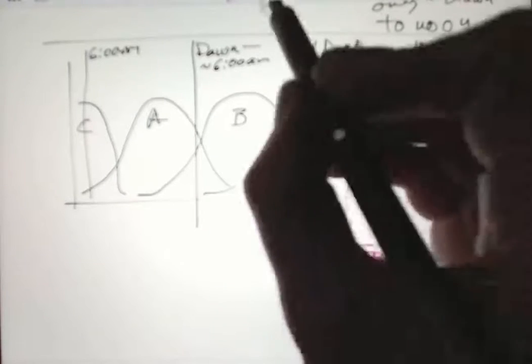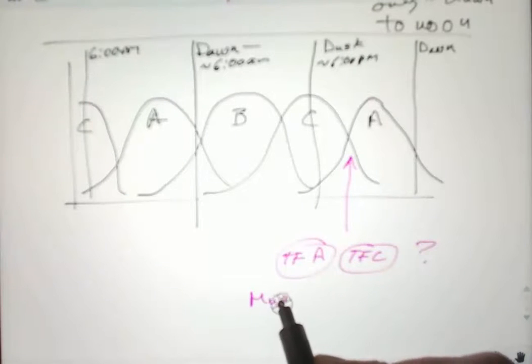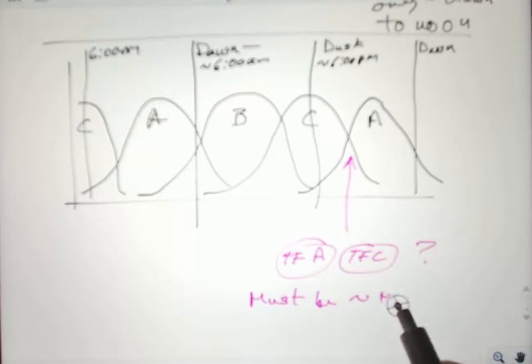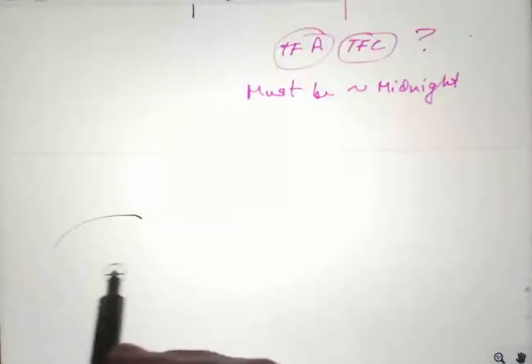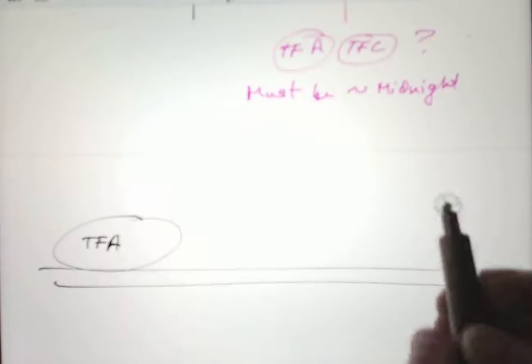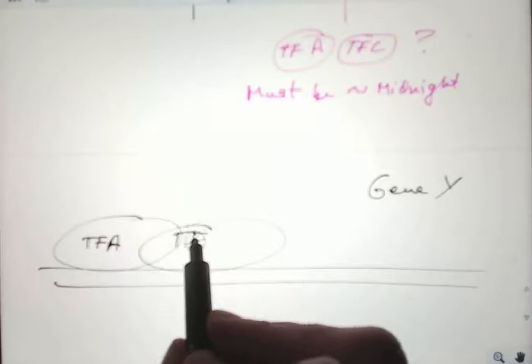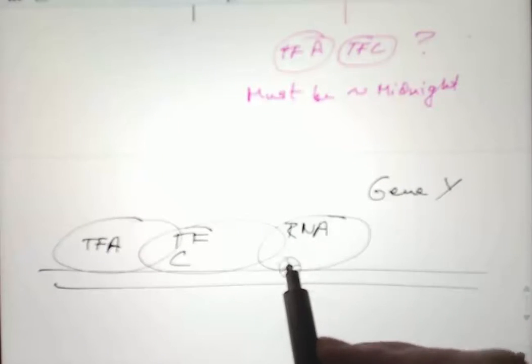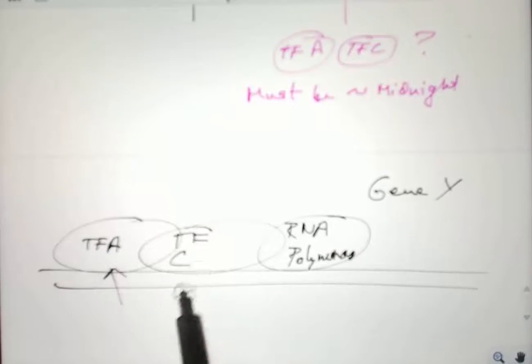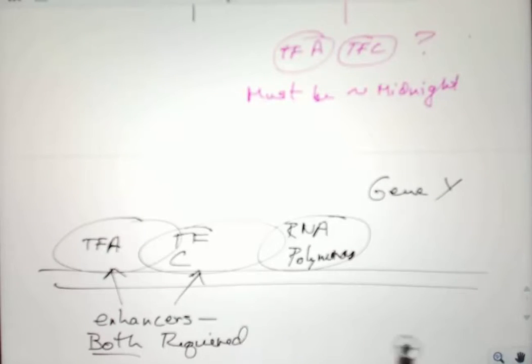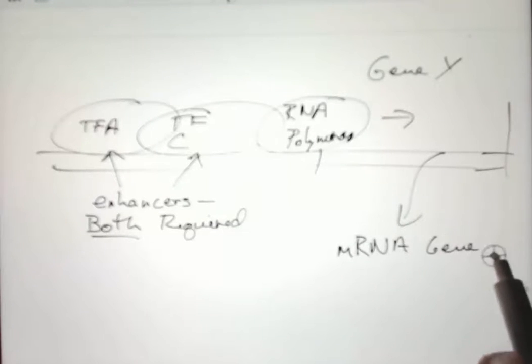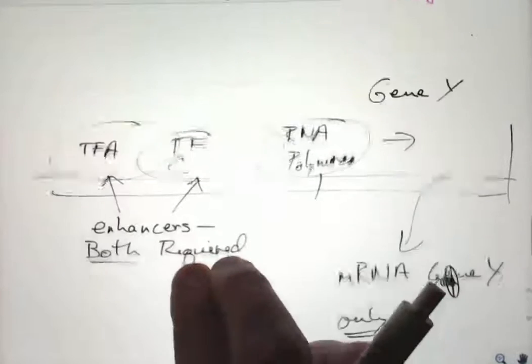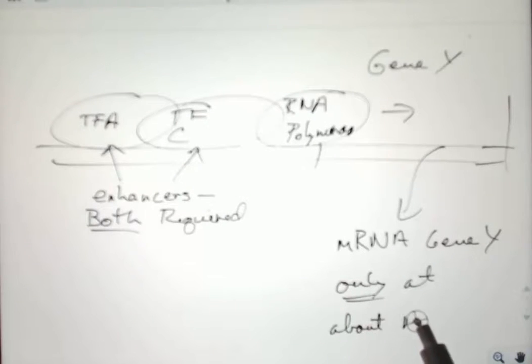Any gene that requires transcription factors A and C only is going to require them in that period after dusk, somewhere around dusk to midnight. Gene TFA and C here, here's RNA polymerase. TFA and TFC are both enhancers, and they're both required for gene Y. You're only going to get messenger RNA when both TFA and TFC are present, and that's only going to happen in that period around evening to midnight.